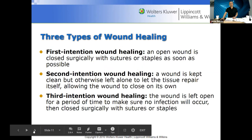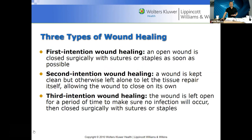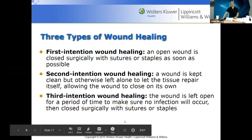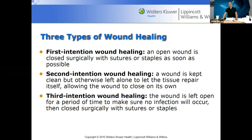Some injuries or intentional surgeries that go down to the muscle area — like liposuction or tummy tucks — can take a long time to heal, sometimes up to a year. First intention wound healing is when an open wound is closed surgically — staples are there to keep things closed so bacteria doesn't go in there. Second intention is when the wound is kept clean but left alone to let tissue repair itself, allowing the wound to close on its own. Third intention is when the wound is left open for a period of time, then closed surgically with sutures or staples.